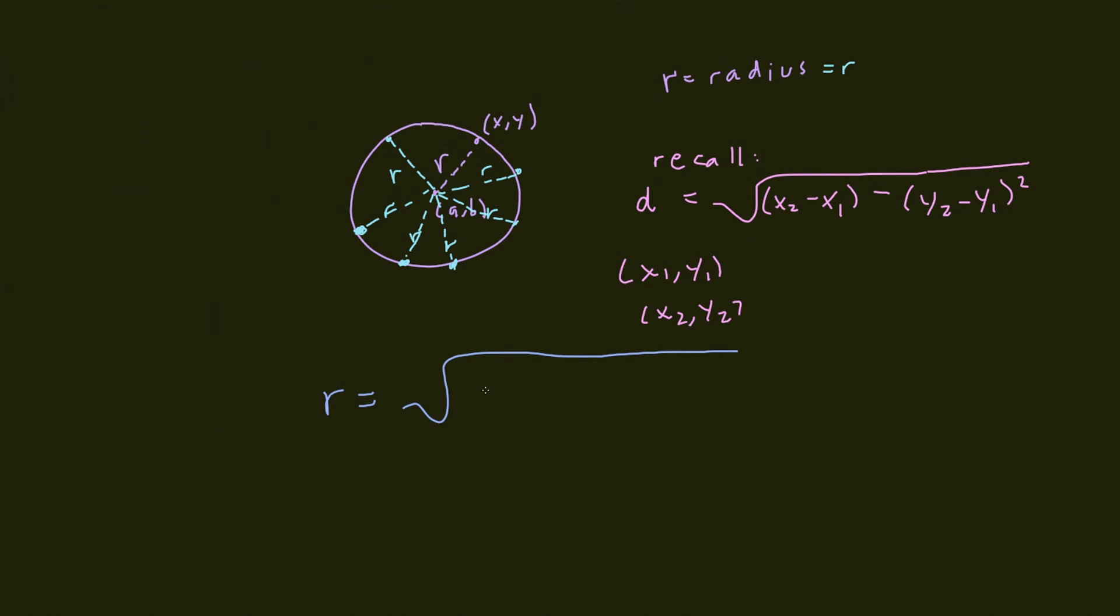We have two points. So I'm just going to write x minus a, square, plus, oops, this should be a plus, and then y minus b, square.